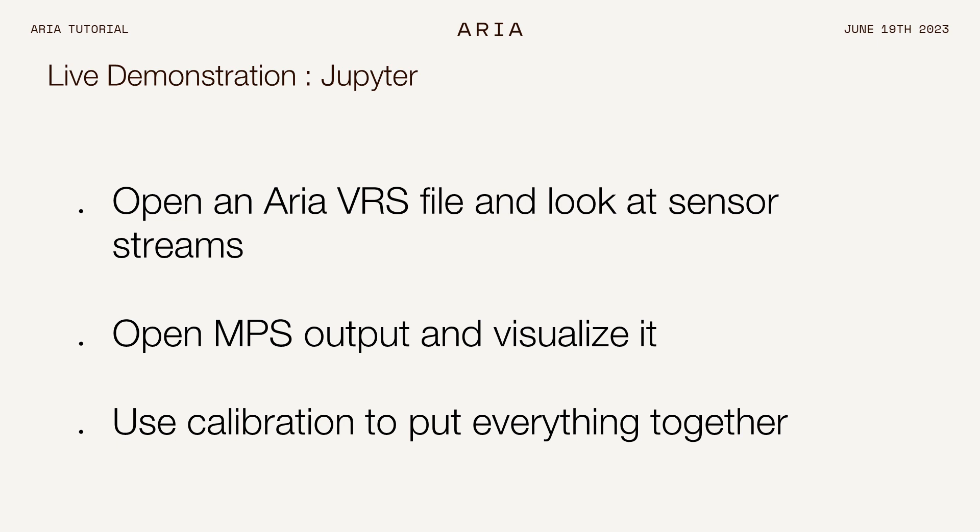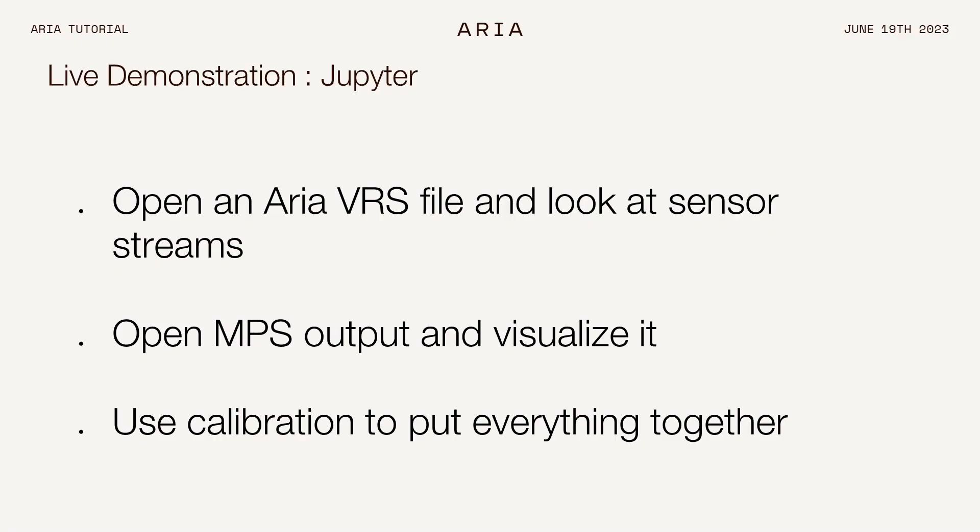At a high level, we'll be running code in Python in a Jupyter notebook. We will see how easy it is to open an ARIA VRS file and examine the data in it. Then we will switch gears and try to load some of the MPS output that Jacob talked about. And then in the end, we'll try to use ARIA's calibration APIs to put everything together.